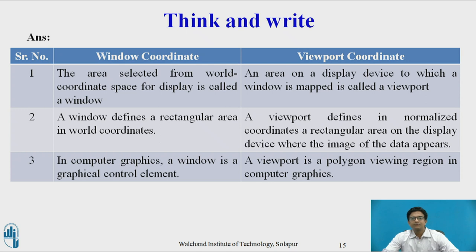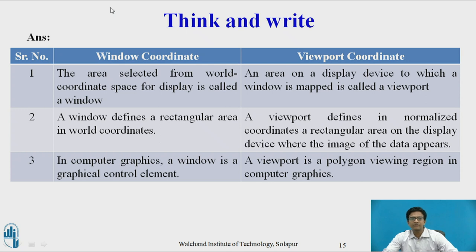A window defines a rectangular area in world coordinates, while a viewport defines an area in normalized device coordinates. In computer graphics, a window is a graphical control element, and a viewport is a polygon viewing region.